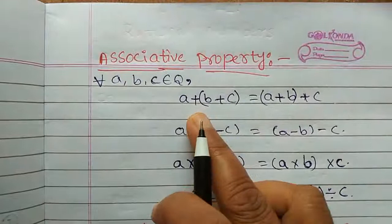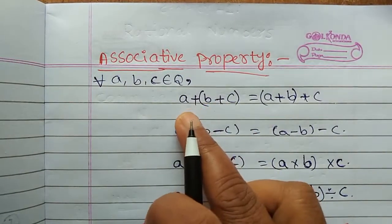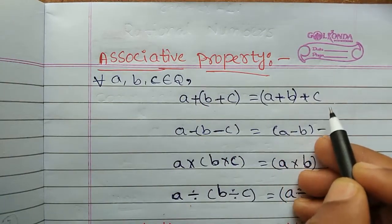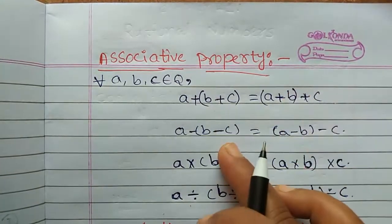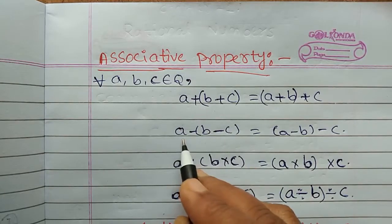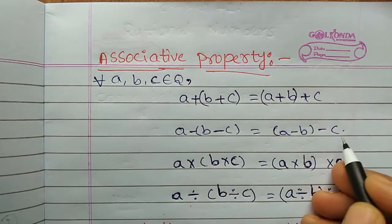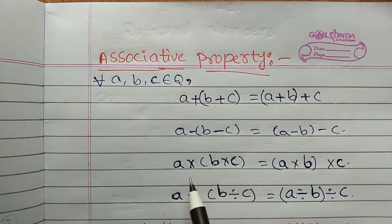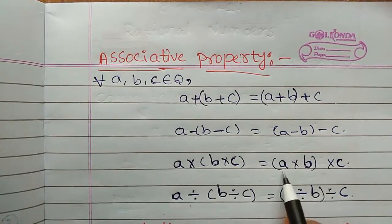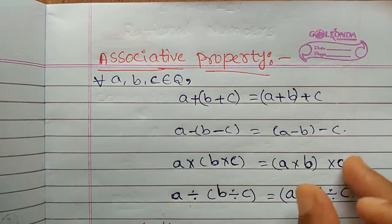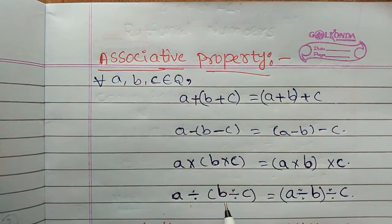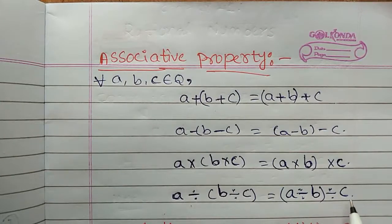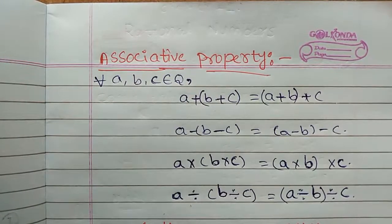So in addition, you can either add the first 2 numbers and then add the third, or add the second and third numbers and then add the first — the result will be the same. In subtraction also, subtract the second and third, then subtract the first; or subtract the first 2 and then the third — result is the same. Same for multiplication. In division also, the same concept applies.